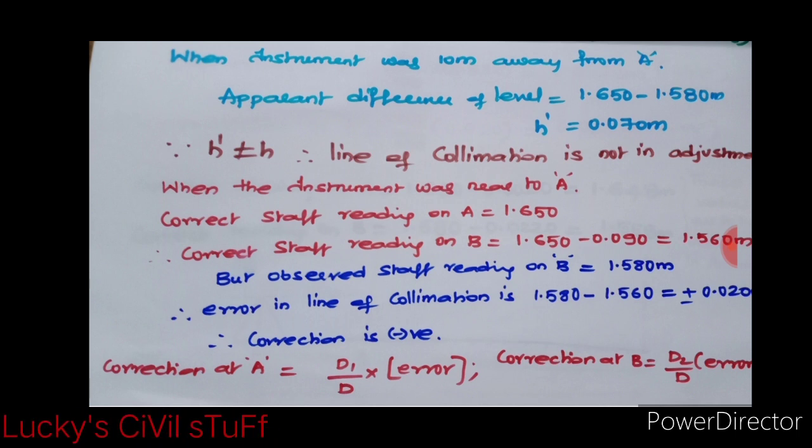The error in line of collimation is observed minus correct, so what you are getting? Plus 0.020. Therefore, what will be the correction? Negative.